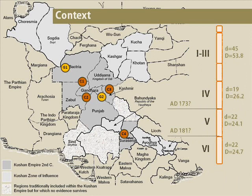There are 6 mints within Huvishka's empire: 2 producing gold — one in Bactria in the north, one further south — and 4 producing copper at different points. Within the principal gold mint, located in Bactria in the north, we can subdivide its production into 6 phases. This is all material that will appear in the catalogue that Joe and I are producing as part of the Kushan Coins Project when it's eventually published.